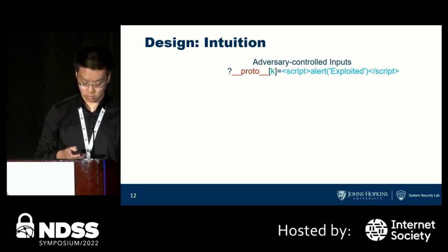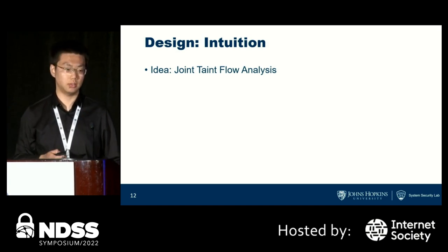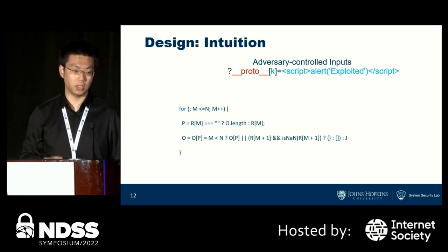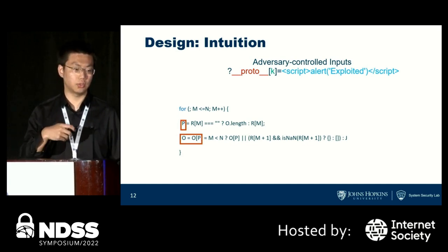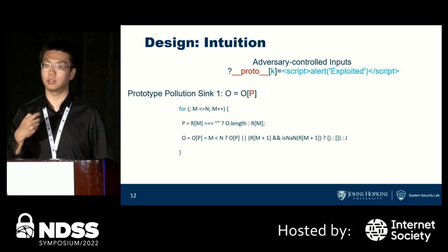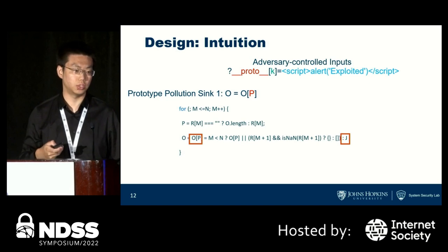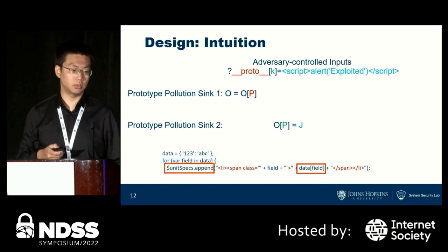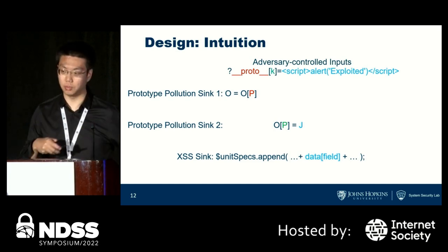The key novelty of our design is called joint taint flow analysis, where we put adversary-controlled inputs as well as vulnerable calls together. In the first iteration, the statement O equals O bracket P is executed — this forms our first sink function for prototype pollution. Then in the second iteration, O bracket P equals J is executed, forming our second sink function.